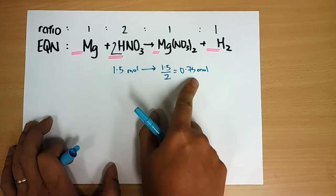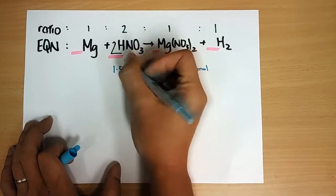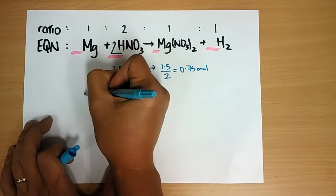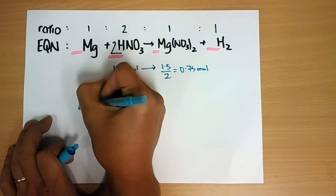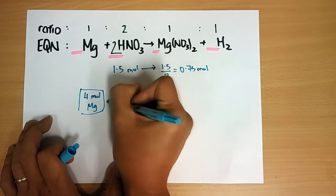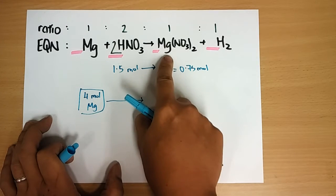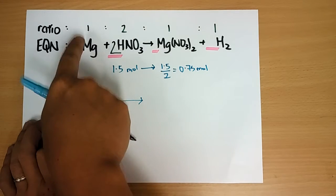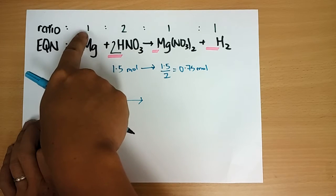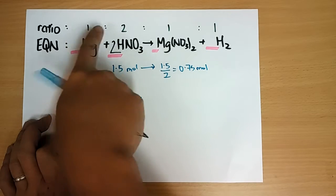Now if I have 4 moles of Mg, how many moles of Mg(NO3)2 would that give me? Let's look at the universal ratio again, the general ratio. If you have 1 is to 1,